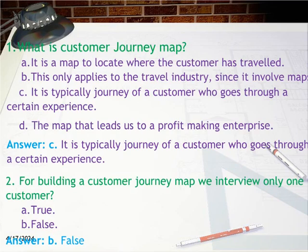Option C: It is typically the journey of a customer who goes through a certain experience. Option D: The map that leads us to a profit-making enterprise. Answer: C — It is typically the journey of a customer who goes through a certain experience.